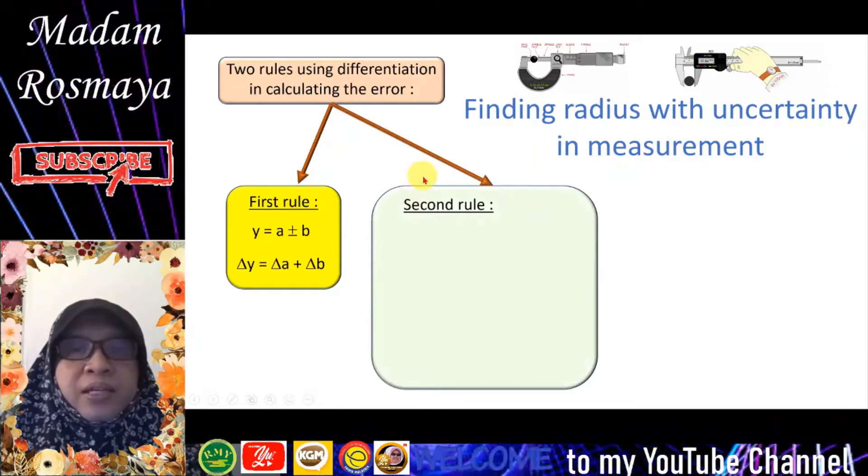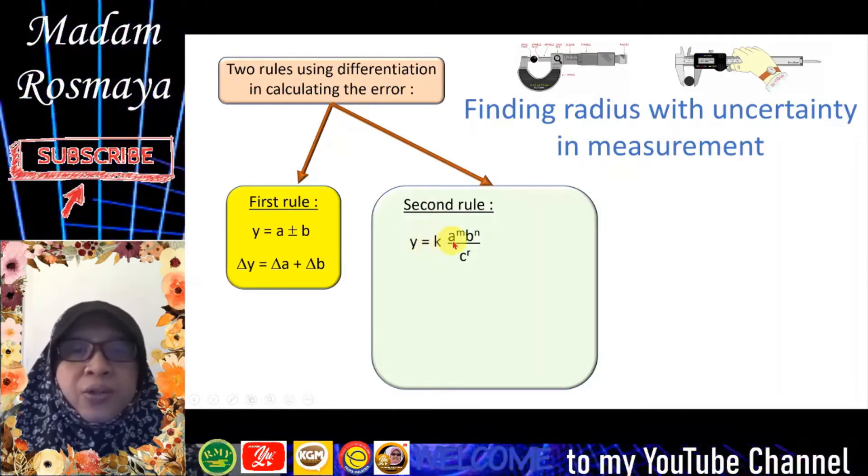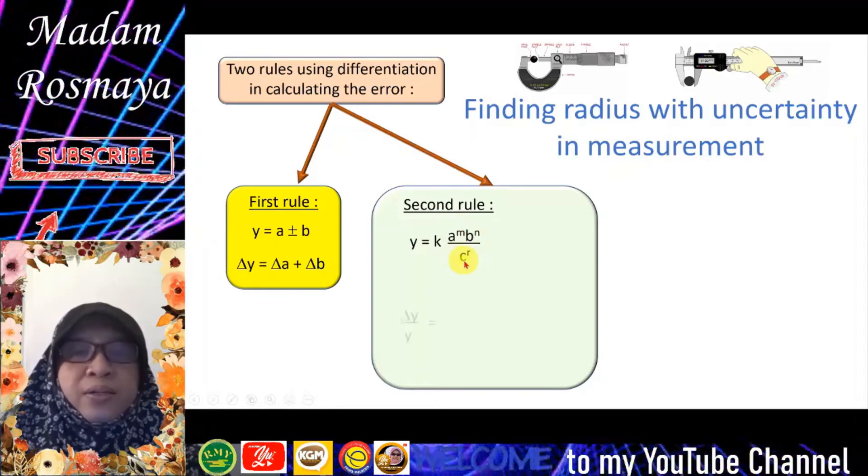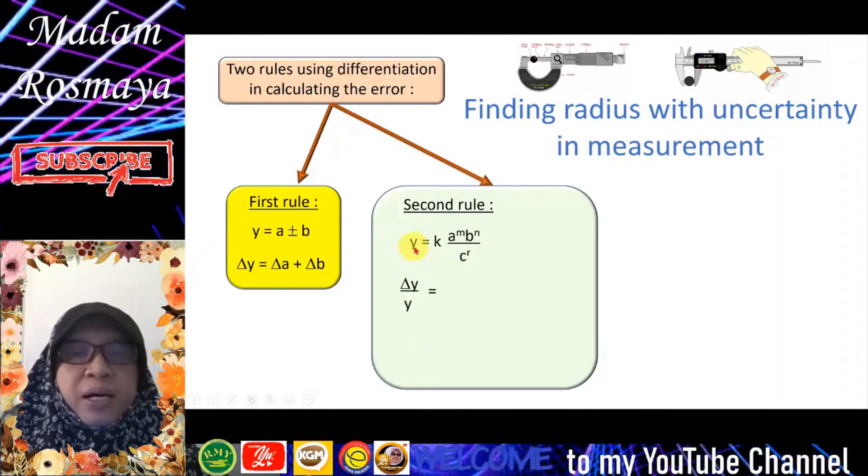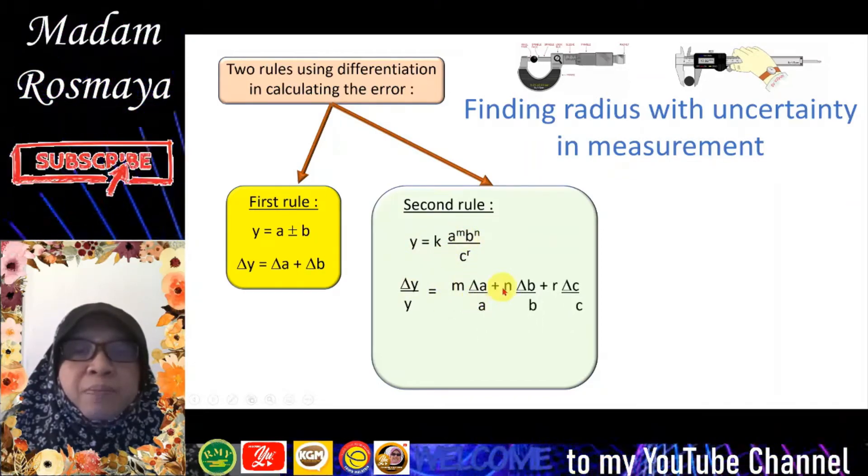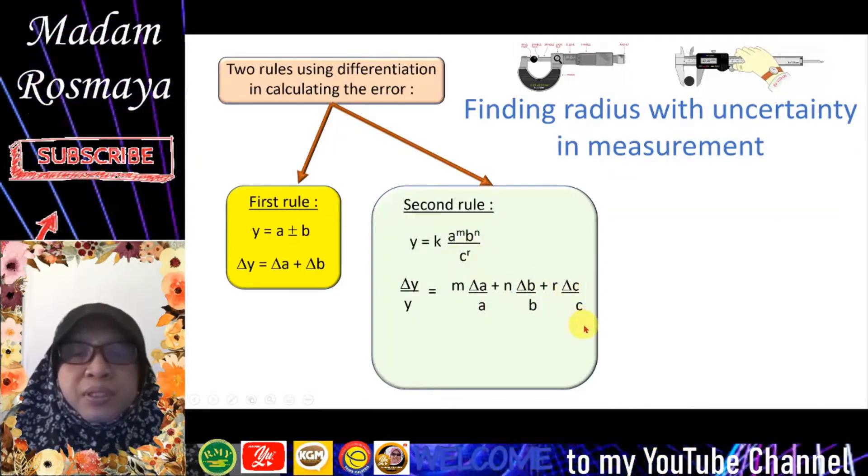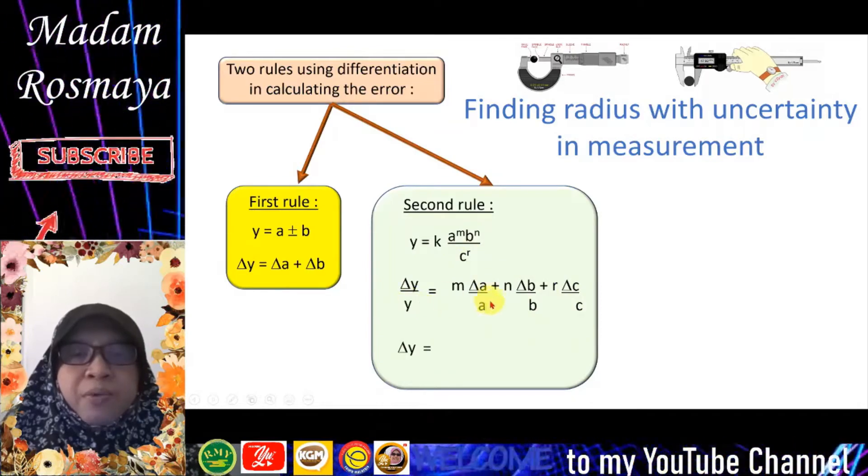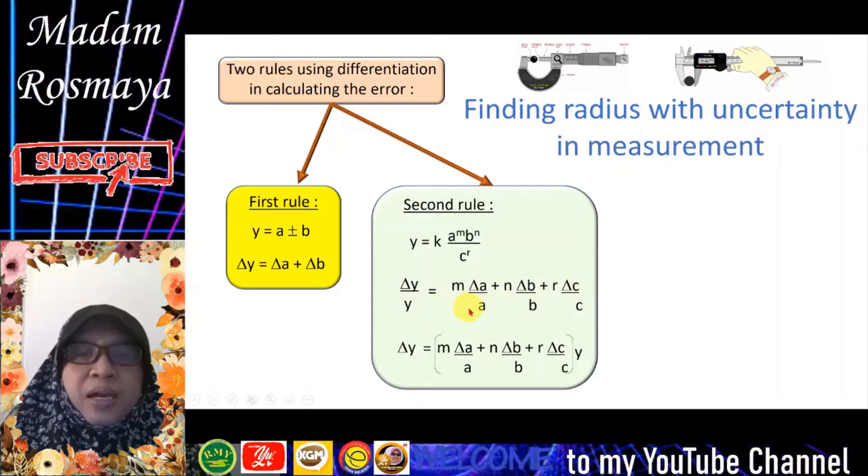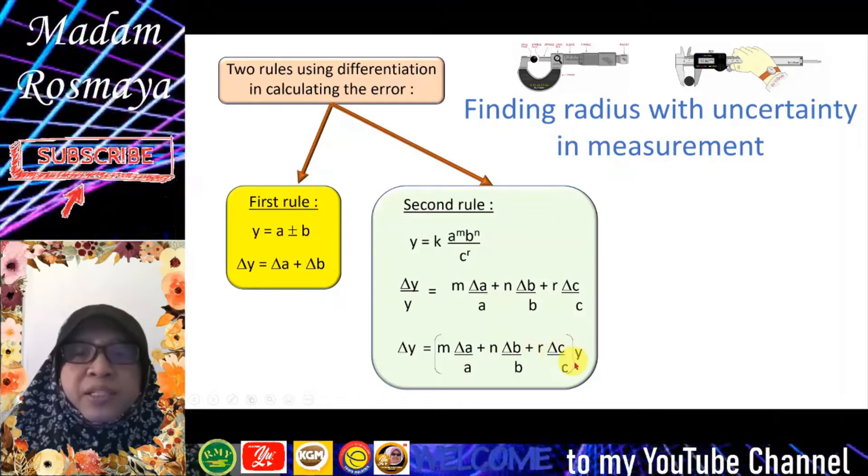And the second rule: if the formula is y = k(a^m)(b^n)/c^r, then the error will be Δy/y = m(Δa/a) + n(Δb/b) + r(Δc/c). So we cross multiply y to the right side, so it becomes Δy = [m(Δa/a) + n(Δb/b) + r(Δc/c)] × y.